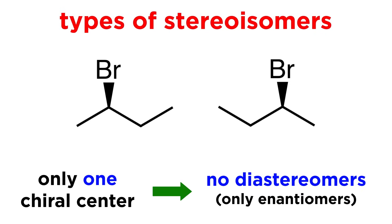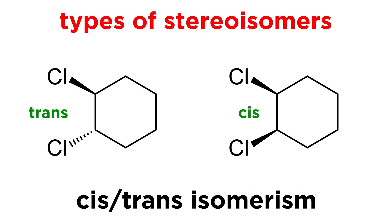That is why molecules with only one chiral center can't have diastereomers — they only have an enantiomer. In addition to diastereomers, cis-trans isomerism also falls into this category, such as where we have multiple substituents on a cyclic molecule, and those substituents can either be cis or trans with respect to one another. The cis and trans versions are diastereomers of one another.